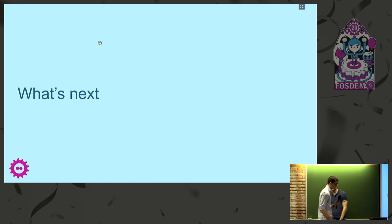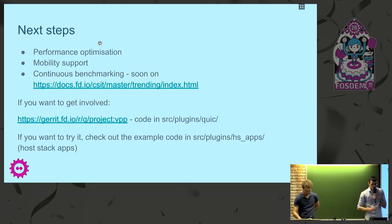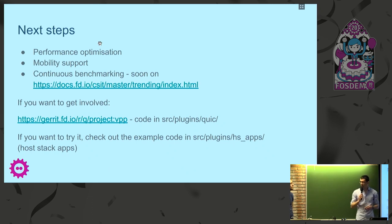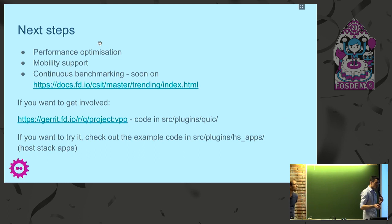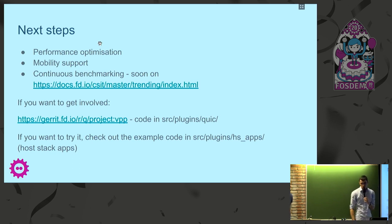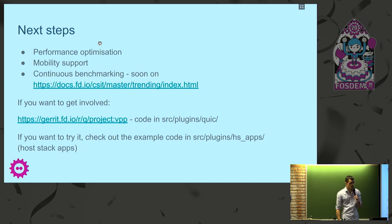So what's next? This is still a work in progress. There's still work to do on performance optimization. One thing we want to work on is hardware offloads — the crypto batching uses the quicly offload API, meaning we currently process it with VPP's crypto API in batches, but it will also be possible to send packets to a crypto card for further processing to free CPU resources. We want to support mobility. We'll have continuous performance benchmarking available publicly soon on the VPP platform. And of course, all of this is open source — feel free to check out the code.